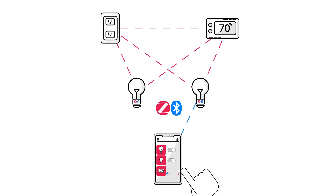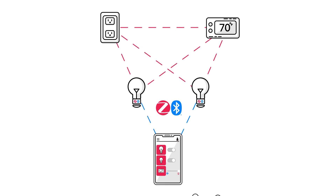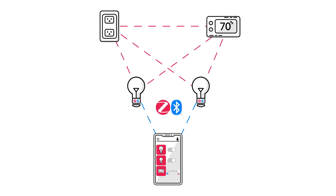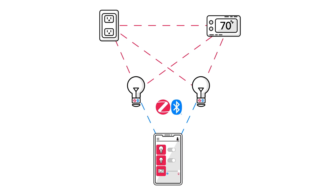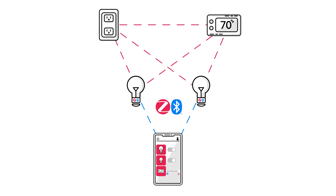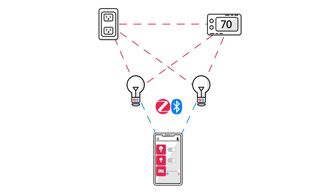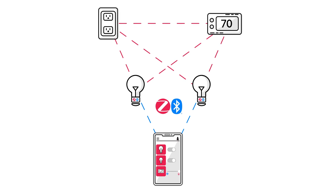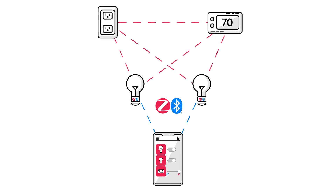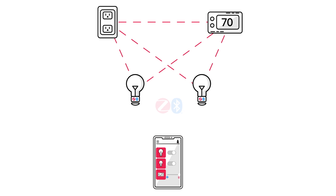Turning on lights and changing the temperature can now happen directly from your phone to the Zigbee network, reducing the number of additional hubs required. This new feature provides more flexibility for experienced Zigbee end users, utilizing the convenience of existing Bluetooth Low Energy connected devices to expand their device networks.